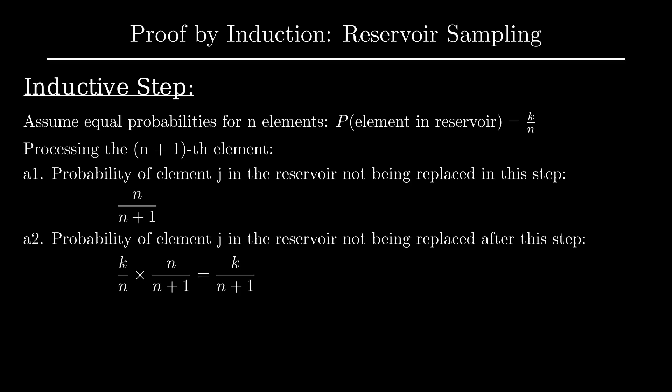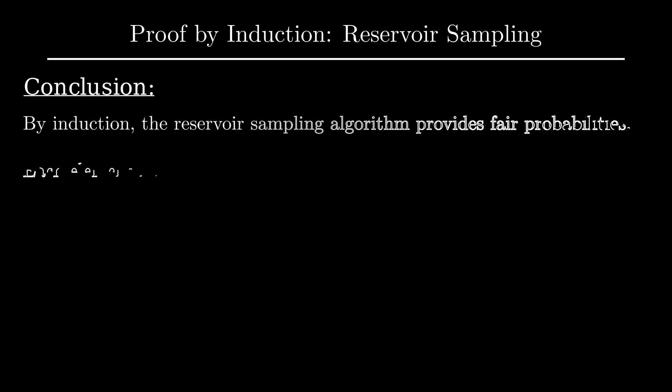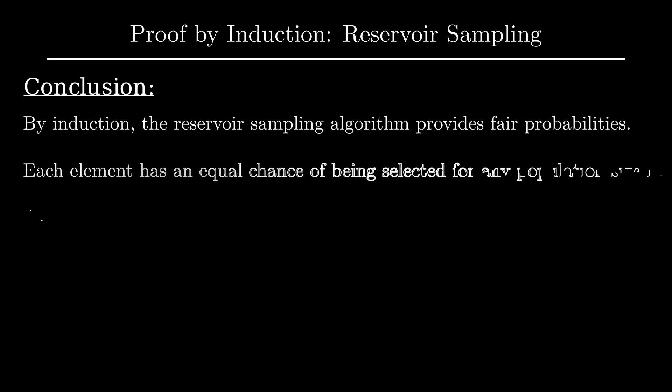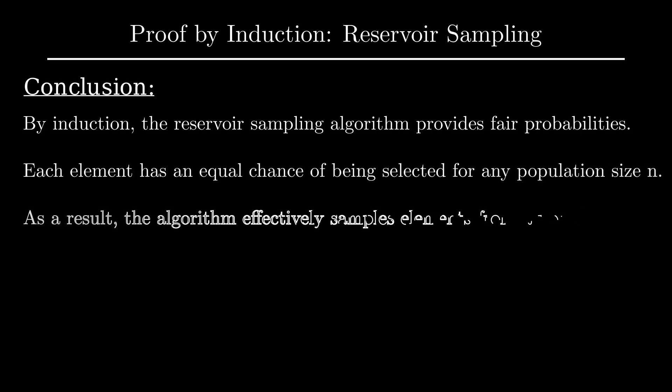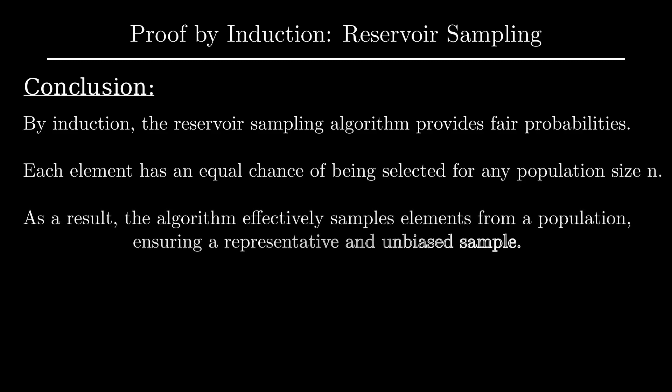Concerning the new element, the algorithm guarantees that we include it with probability k divided by n plus 1. We have shown that the probability that a new input enters the reservoir is equal to that of an existing one remaining in it. By the principle of mathematical induction, we conclude that the algorithm does indeed produce a uniform random sample of the inputs.